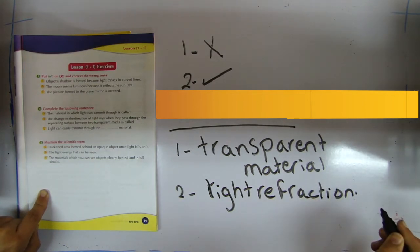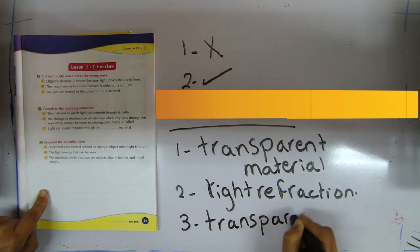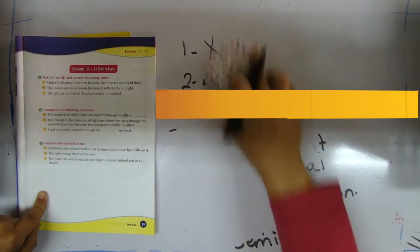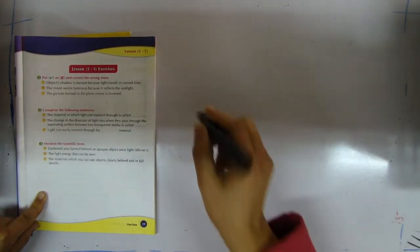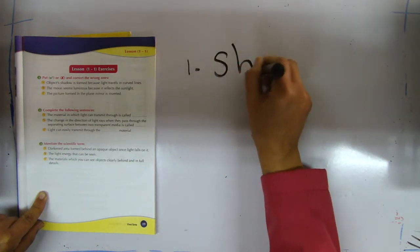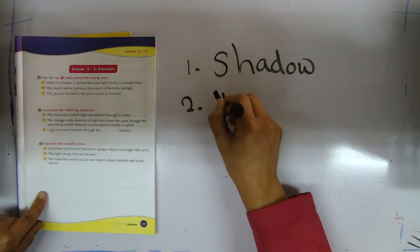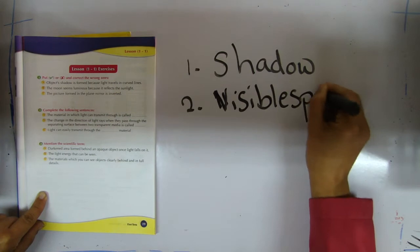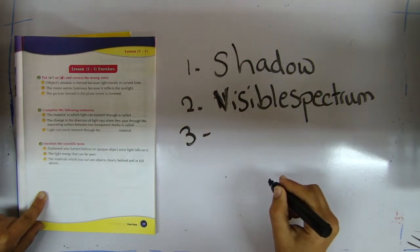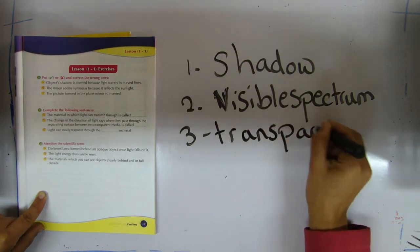Number three: light can easily be transmitted through transparent material and semi-transparent material. Question number three: mention the scientific term. Number one: dark area forming behind an object once light falls on it, which is shadow. Number two: the light energy that can be seen is visible spectrum. Number three: the material which you can see objects clearly behind and in full details is called transparent material.